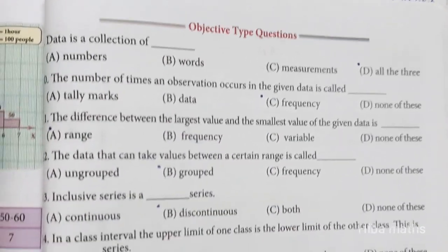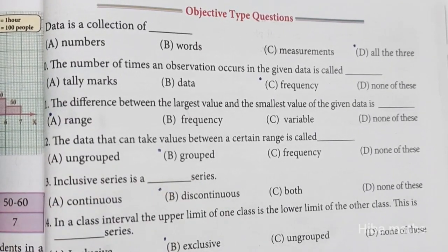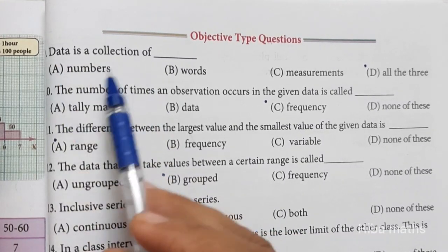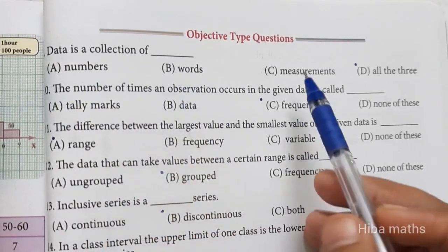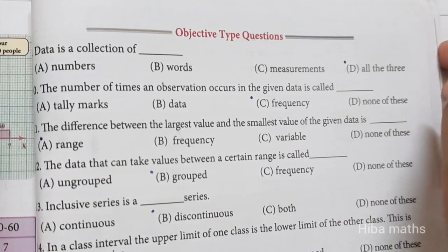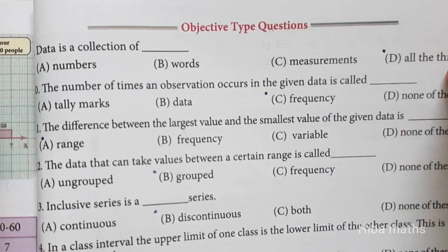Here we are talking about the exercise and calculations in the book. Data is a collection of numbers, words, and measurements. So all the three. The last option is all the three.